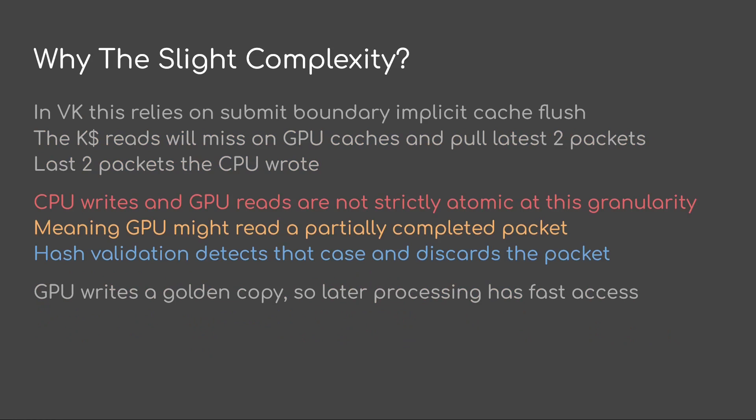So why the slight complexity? In Vulkan this relies on submit boundary implicit cache flush. Therefore the kcache reads will miss on the GPU caches and then pull the latest two packets — the last two packets that the CPU wrote. Note that CPU writes and GPU reads are not strictly atomic at this granularity, meaning the GPU might read a partially completed packet. So the hash validation detects that the packet is partially written and therefore the shader can discard it. Afterwards, the GPU writes a golden copy so that later processing has fast access.